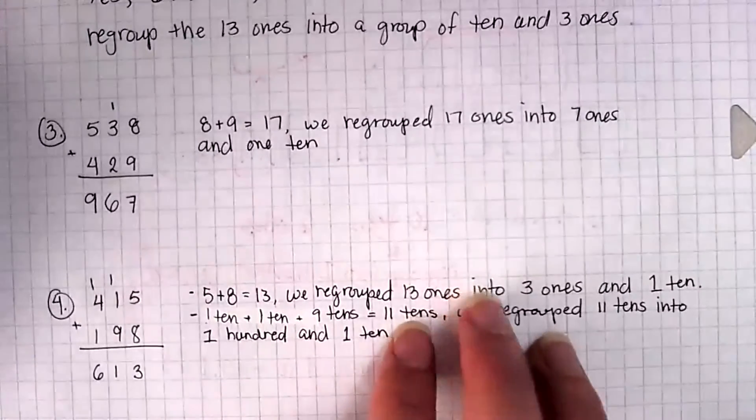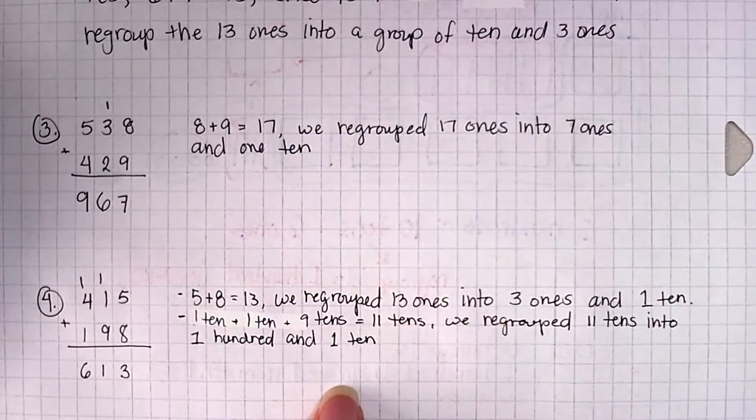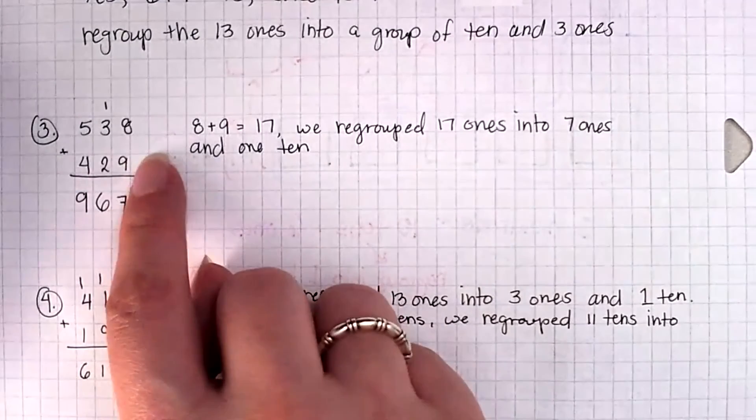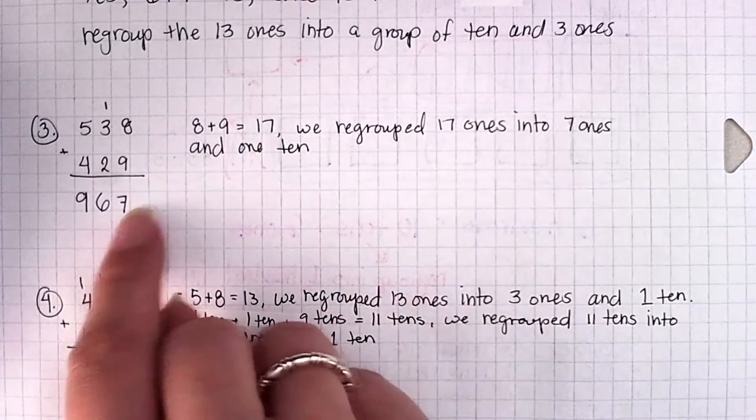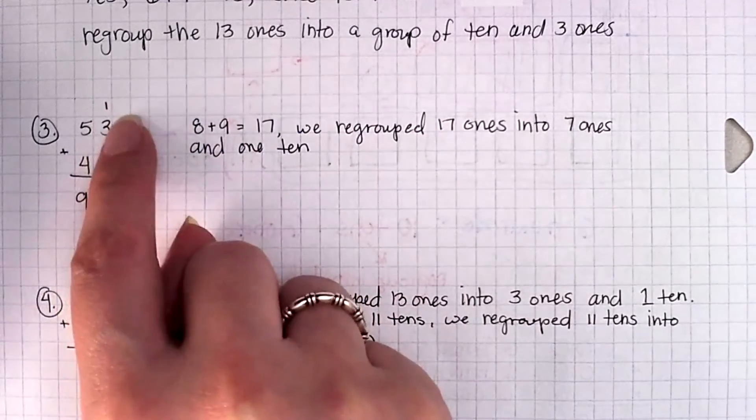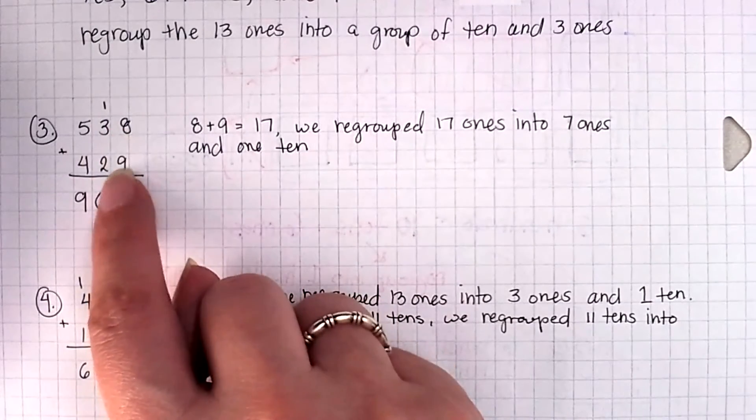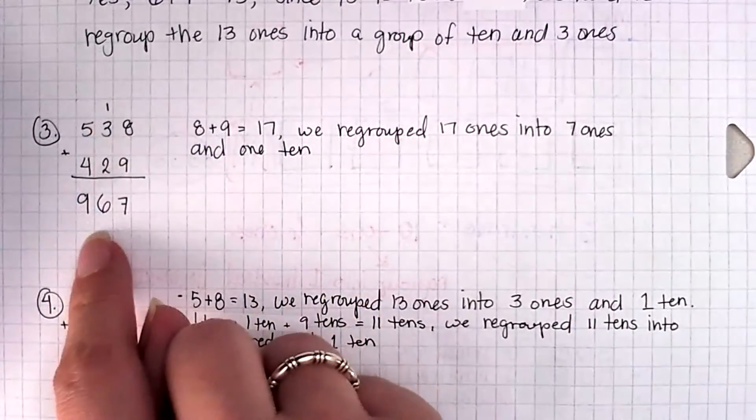Now for numbers 3 and 4, we're going to be doing the addition, and I wrote down on the side the regrouping that we did so that you know where that happened. So 8 plus 9 is 17. So I put my 7 over here, and my group of 10 from the 17, I carried it over into the 10s place. So that's how I regrouped it into the 10s. 1 plus 3 is 4, plus 2 more is 6. That's 6 tens. And then 5 plus 4 is 9.